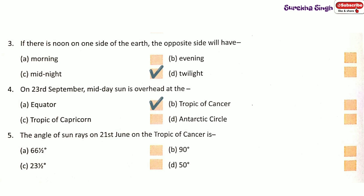Question 5: The angle of sun rays on 21st June on the Tropic of Cancer is Option B: 90 degrees.